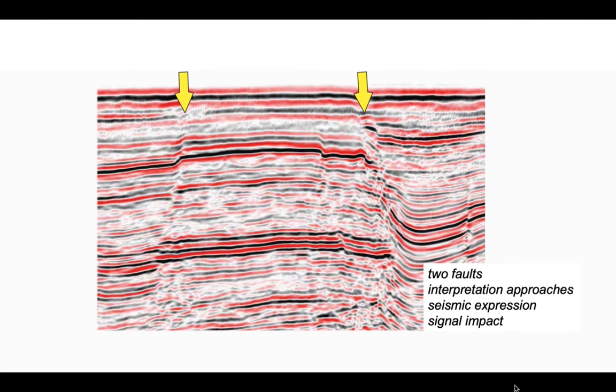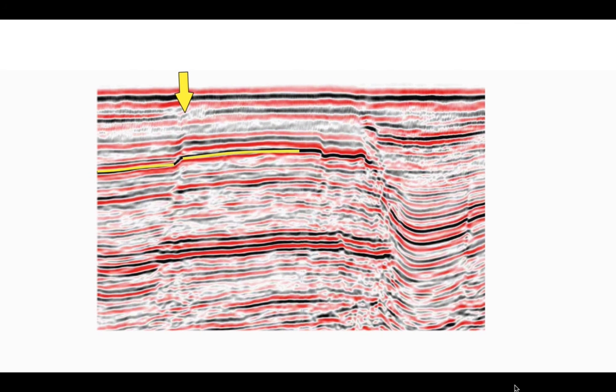Here are two fault zones that we're going to consider and we'll start off looking at the one on the left. A good place to start is to try and find some reflectors that we can correlate unambiguously across the fault zone. The best place to do that is relatively shallow where the seismic quality is better. And that's what we've done here. We can see that the left hand side has gone down relative to the right like this.